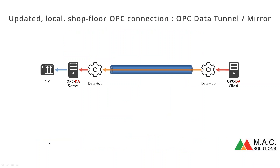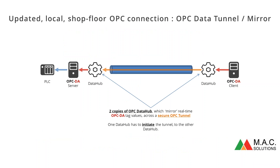Another way to do this is to use what's called an OPC data tunnel or mirror, and the Cogent Data Hub software specifically does this. At one end the Data Hub acts as an OPC DA client — it connects to the OPC DA server. Within this Data Hub near the OPC DA server, the tags of interest are configured, and those data values are mirrored across to the right-hand side where the OPC Data Hub on the right-hand side acts as an OPC DA server locally to the client. This achieves the same end result — data from the server to the client — but it does it by mirroring the data. This is not an OPC UA connection in the middle; it's a bespoke mirror of data.